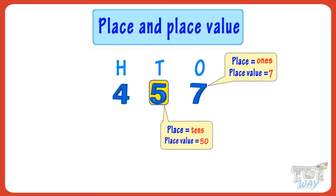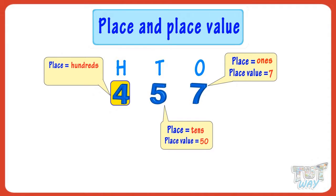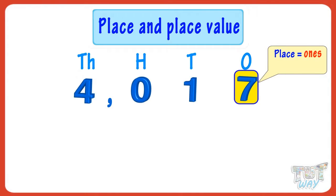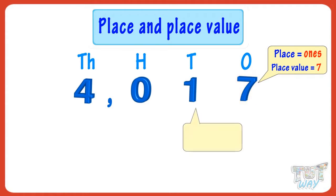Five tens is 50. The place of four is the hundreds place, and the place value of four is four hundred. Now let's take another example. In this new number, the place of seven is ones and the place value is seven. The place of one is tens and the place value is one ten.